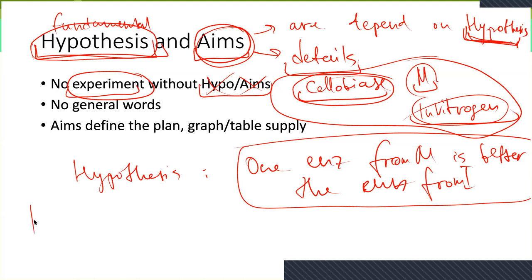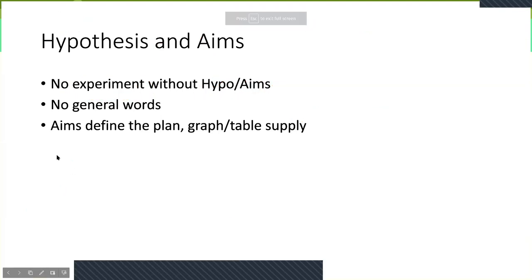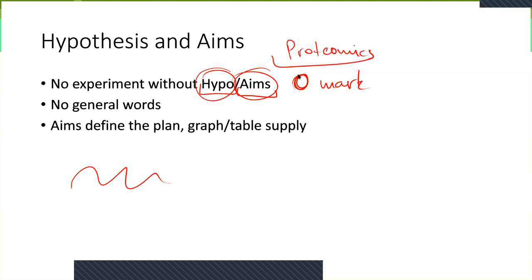You perform some experiments on the conversion of substrate to product — this is your aim. So if you say that you perform some kind of experiment, you absolutely have to have hypothesis and aims. If I don't see these hypotheses and aims in the rest of your lab books, you will get zero marks. For your proteomics project, you will absolutely have to have hypotheses and aims for every single week, because every single week is an experiment that you need to conduct.